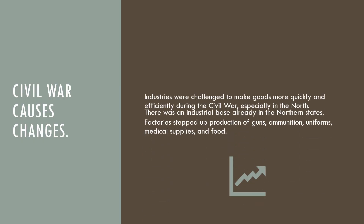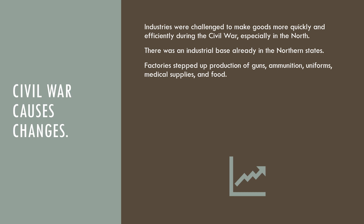The Civil War caused changes as well. Industries were challenged to make goods more quickly and efficiently during the Civil War, especially in the North. The North was already industrially based — while the South was more farming and agriculture, the North was more industry, factories, and commerce. Factories stepped up production of guns, ammunition, uniforms, medical supplies, and food during the war.